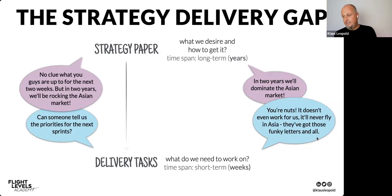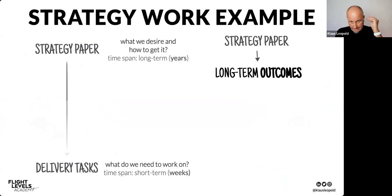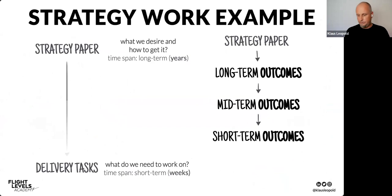On FL3 we want to bridge this gap. We take what's hopefully already in the strategy paper — long-term outcomes — and break them down to mid-term outcomes, then break mid-term down to short-term outcomes. When we're talking about short-term outcomes, we can quite easily connect to delivery tasks. So we break outcomes down across different time scales — that's the important thing.